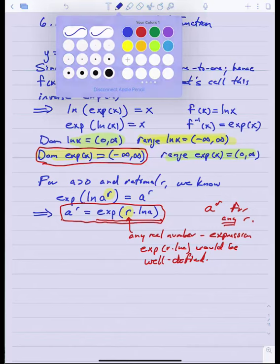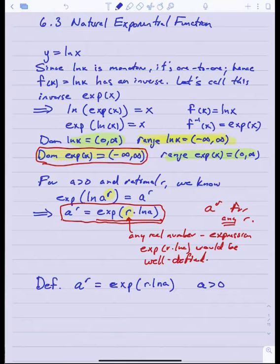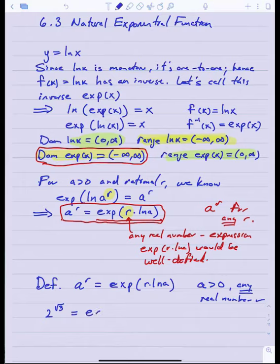So if I know these two are equal for rational r, and I want to extend this to a definition that lets me calculate a to the r for any real number r — not just rational ones — then this is the formula I want to extend. Since the right side is defined for all real r, this is the formula I am going to use to define what it means to raise a to the r power. So at this point I am going to make a definition: a to the r is defined to be exp of r times ln of a, for any positive base and any real number r.